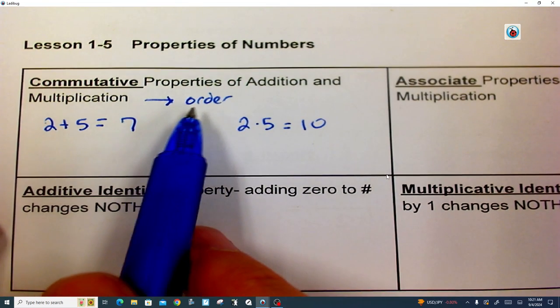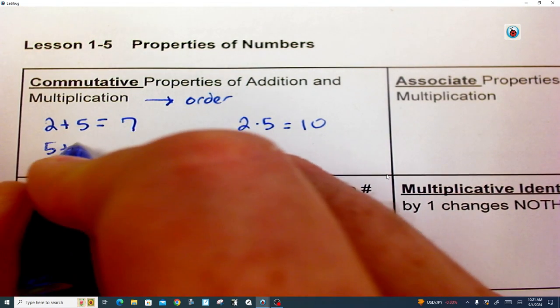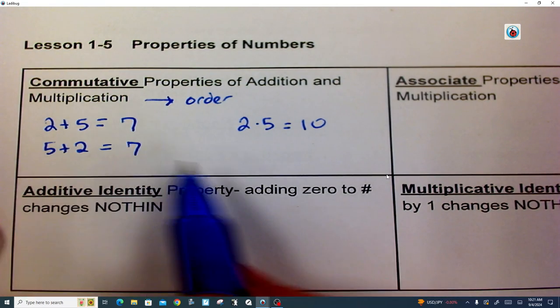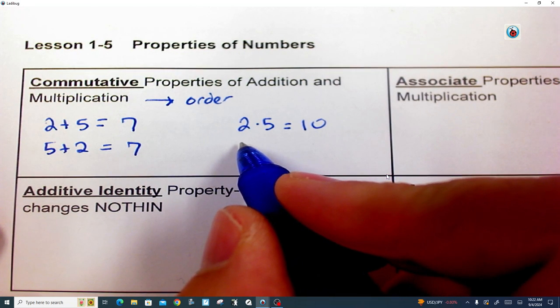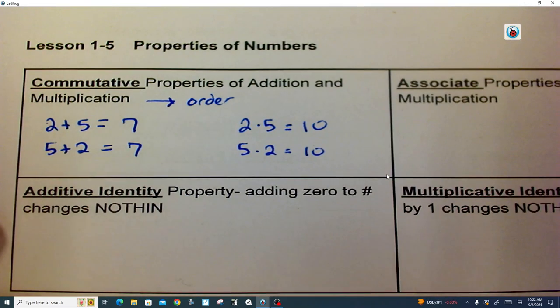Now, if we change the order of 2 plus 5 and we just said it's 5 plus 2, don't we still get 7? So that's the Commutative Property of Addition. Over here is the Commutative Property of Multiplication. It's just 5 times 2. See how we're just changing the order and we still get the same answer.